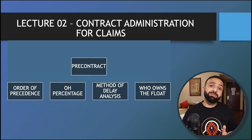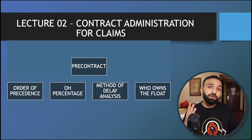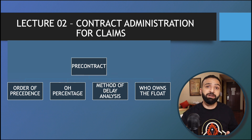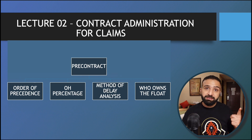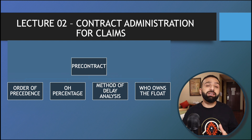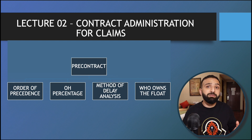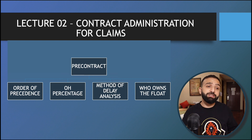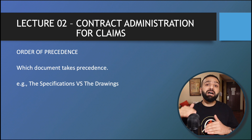At the pre-contract stage, there are four very important things that need to be considered and implemented in the contract agreement: the order of precedence, the overhead percentage, the method of delay analysis, and the ownership of the float. If these four things are defined properly in the contract, then the job of claim preparation becomes very easy.